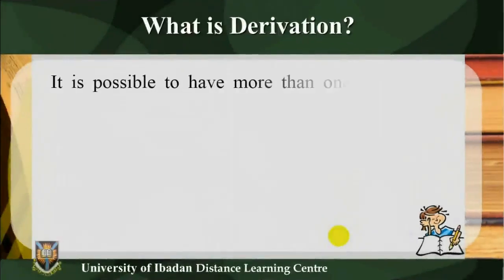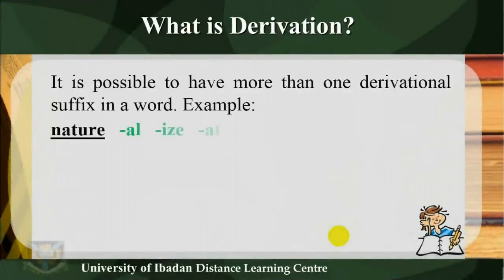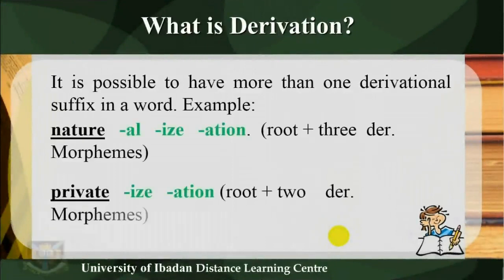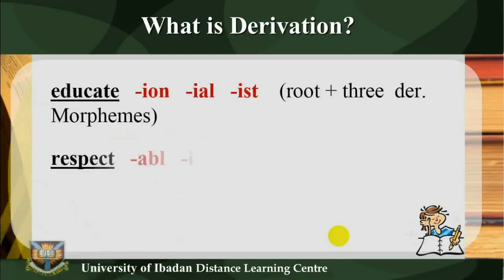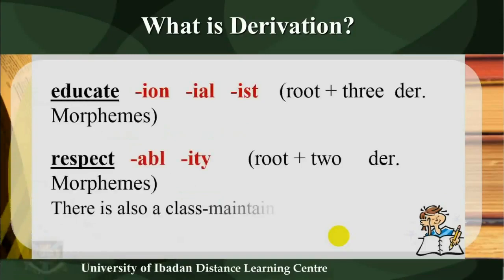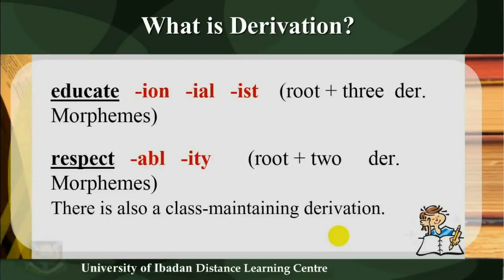It is possible to have more than one derivational suffix in a word. For example: 'nature' + -al + -ize + -ation (root plus three morphemes); 'private' + -ize + -ation (root plus two morphemes); 'educate' + -ion + -al (root plus three morphemes); 'respect' + -abil + -ity (root plus two morphemes).